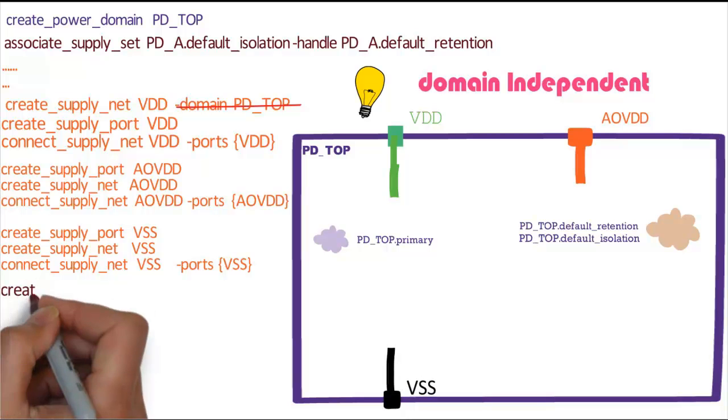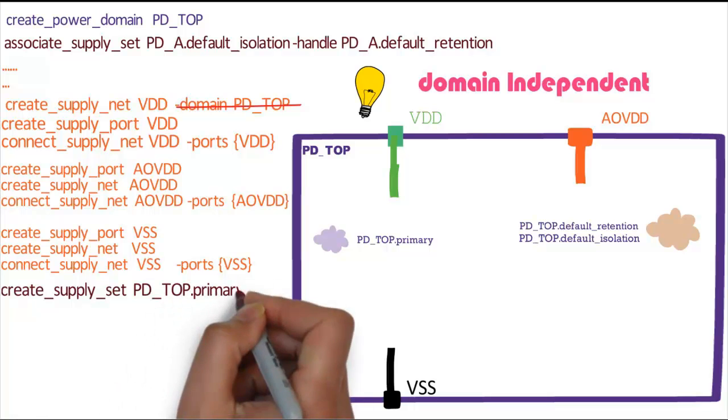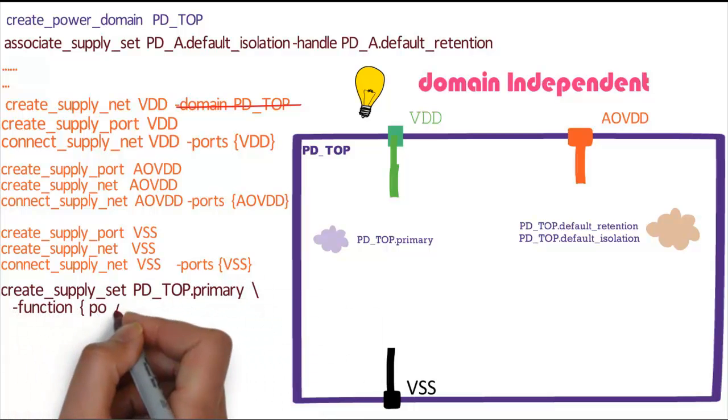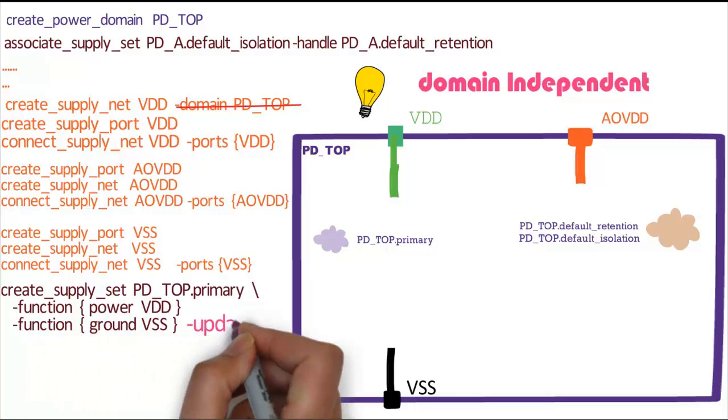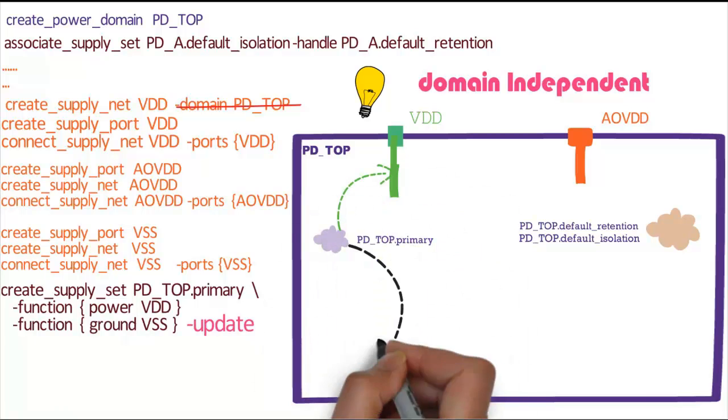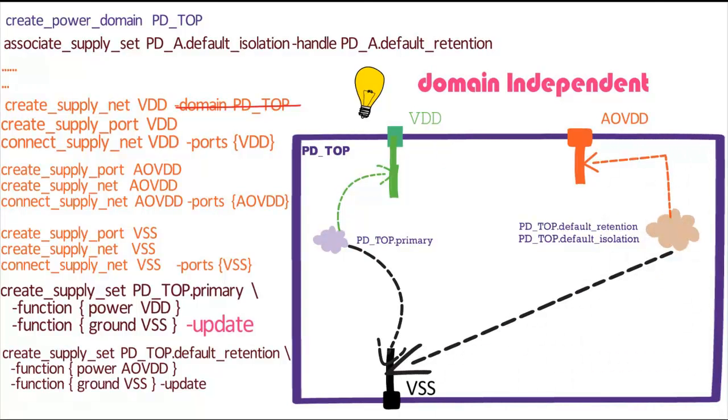Let's map supply set functions to actual supply nets we just created using create_supply_set PD_TOP.primary -function power to VDD and ground to VSS. Remember to use -update option because PD_TOP.primary is already defined. We do the same thing for PD_TOP.default_retention.